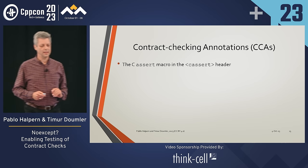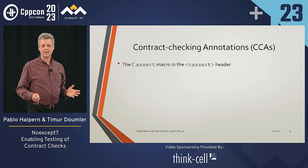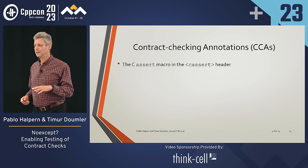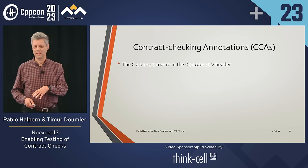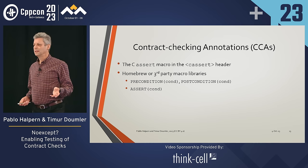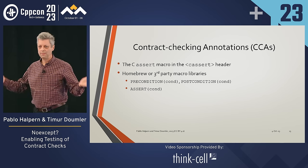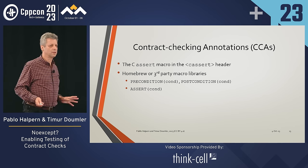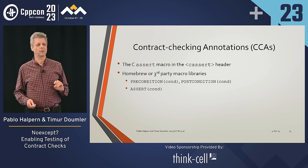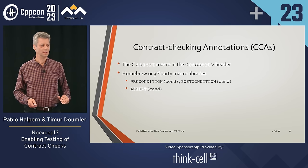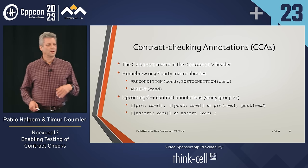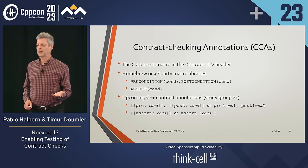Now let's talk about contract annotations in general. We just saw using the assert macro from C — venerable old assert. It still works, but it's not very configurable. The only choice you have is to ignore it or terminate the program if the condition fails. More sophisticated libraries have more sophisticated macros. A precondition check and a postcondition check are two of the three kinds of checks — the third is an invariant check. A third possibility is that the standard may change, which is something actively being worked toward.